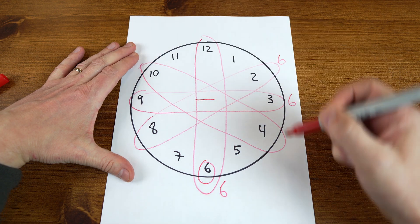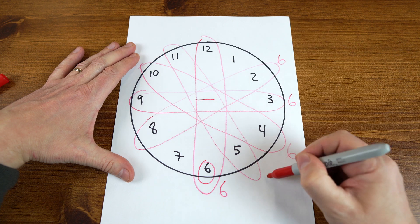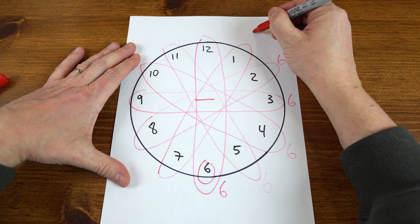10 minus 4, 6. 11 minus 5, 6. 7 minus 1, 6.